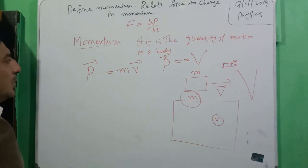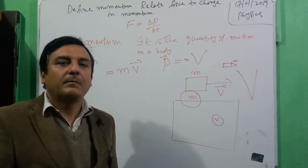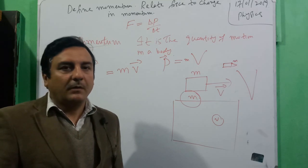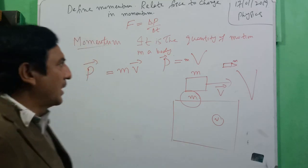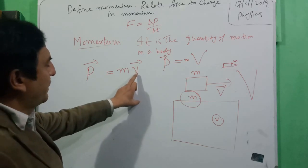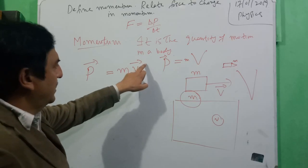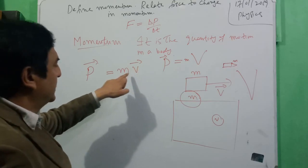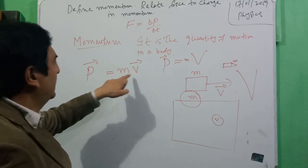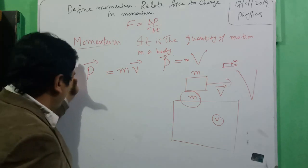Momentum is the product of mass and velocity. It is a physical quantity and is a vector quantity, because velocity is a vector. When a vector is multiplied by a scalar — mass is a scalar — the obtained quantity is also a vector.